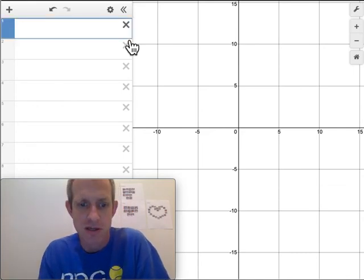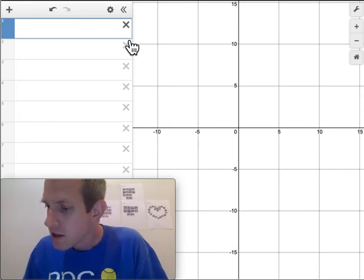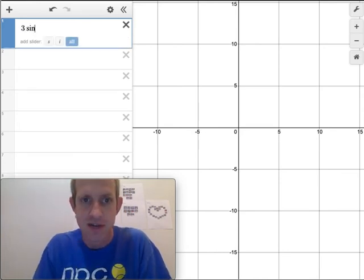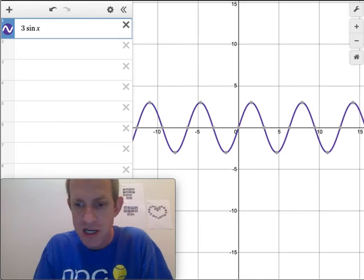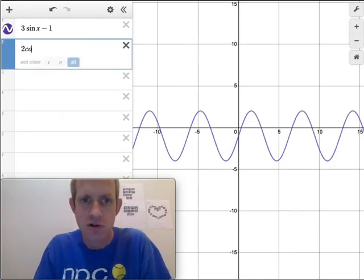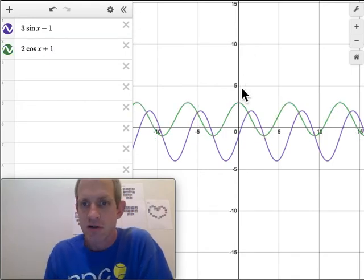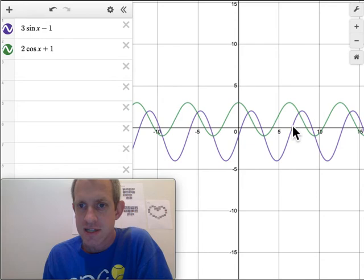Desmos is easier, but it's not always allowed on quizzes and tests. So here's Desmos. We'll type in the left-hand side, which was 3sin(x) - 1, and we'll graph the right-hand side, which is 2cos(x) + 1. And already, I see some curves intersecting in various places.